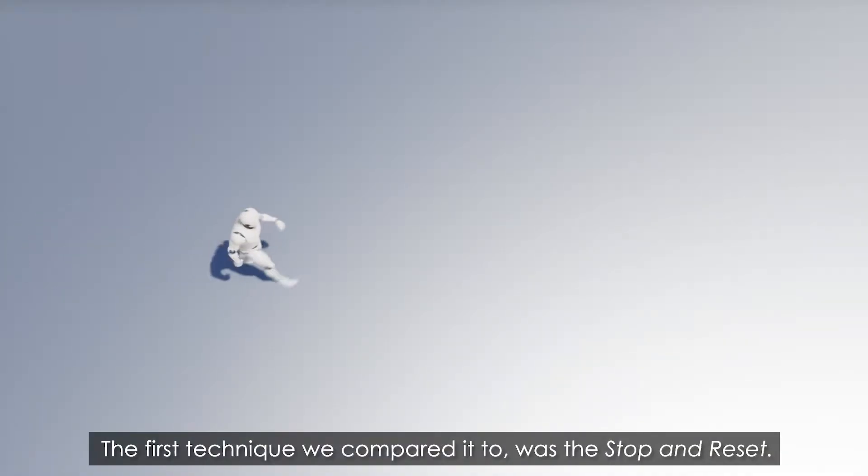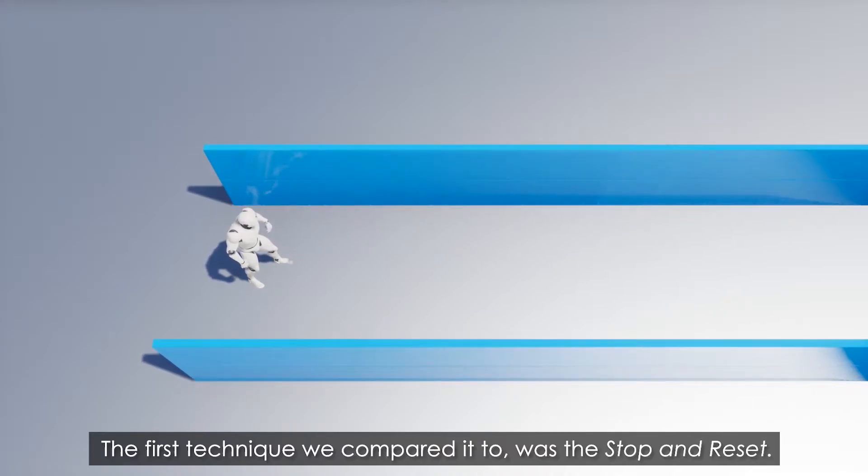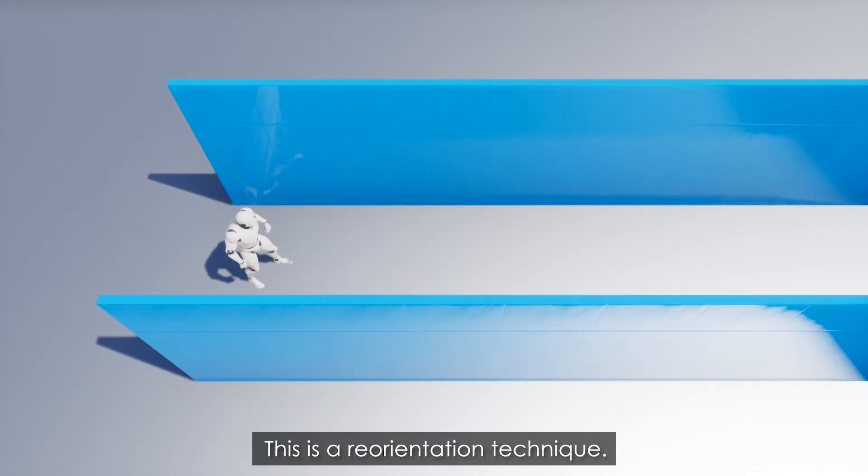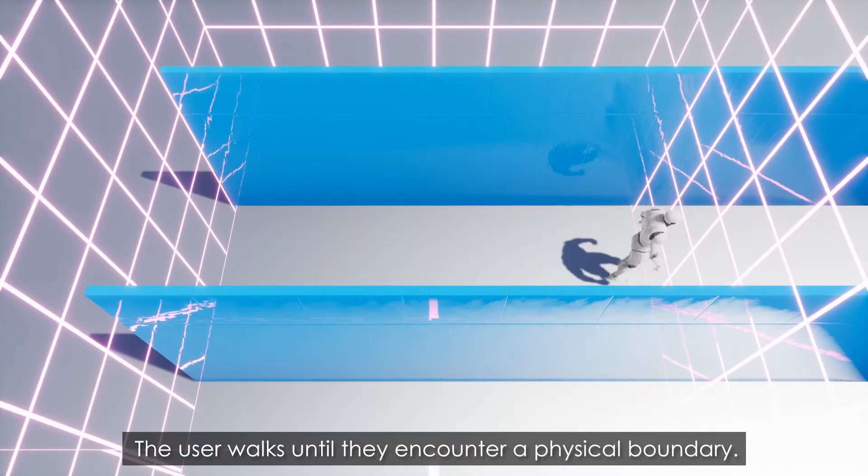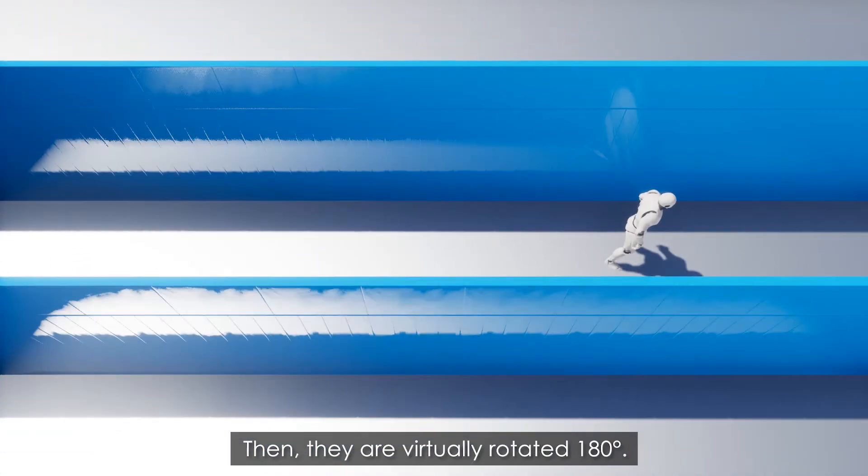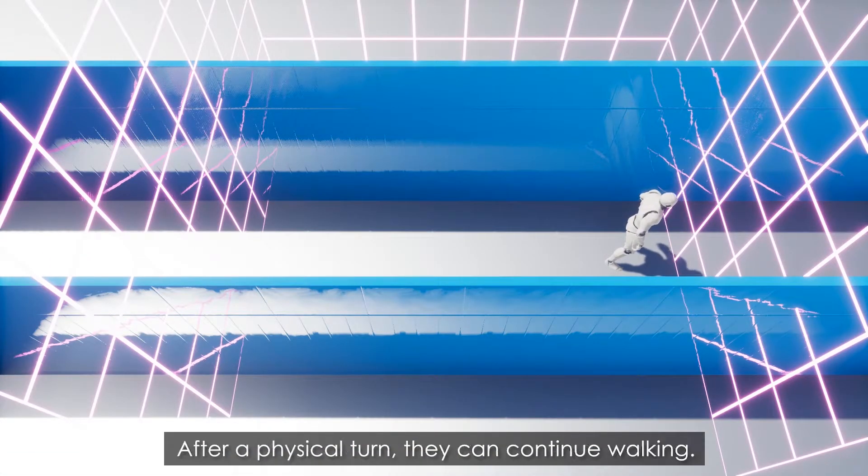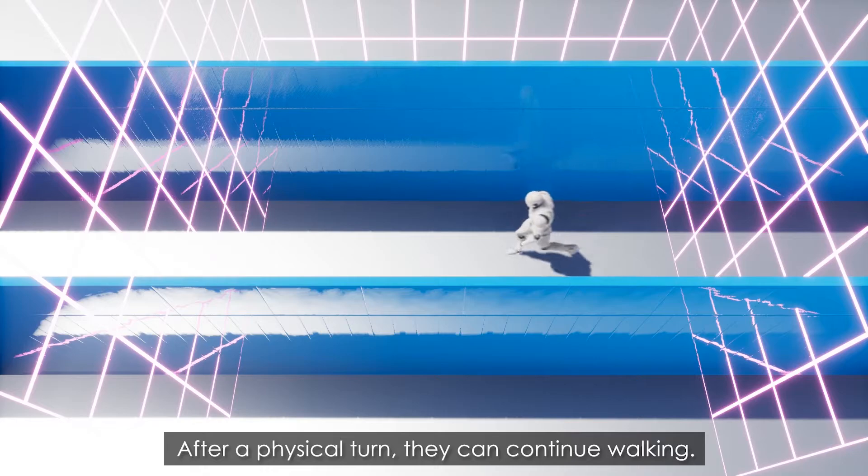The first technique we compared it to was the stop and reset. This is a reorientation technique. The user walks until they encounter a physical boundary, then they are virtually rotated 180 degrees. After a physical turn, they can continue walking.